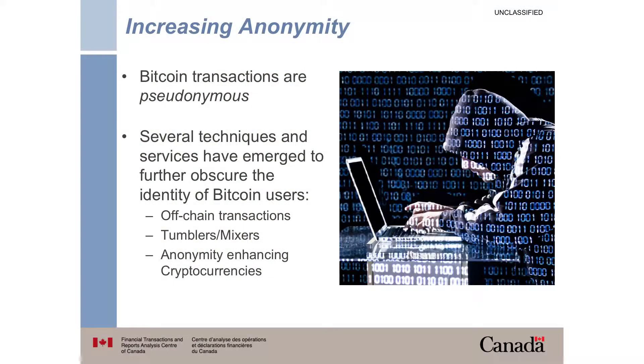In order to protect the financial privacy of users, a host of anonymization services have emerged across the cryptocurrency ecosystem in an effort to obscure the relationship between activities recorded on a blockchain and the individuals responsible for each activity. While there are legitimate reasons why individuals may choose to employ transaction anonymizers, many of these tools have been largely associated with financial crime. Many of these services, including BitLaunderer and DarkWallet, have been created and promoted for the express purpose of money laundering. The various techniques employed to obscure user identity include engaging in off-chain transactions, using services created specifically to mask the origin of funds, or using privacy-centric Bitcoin alternatives — referred to as altcoins — to better mask one's transaction trail.